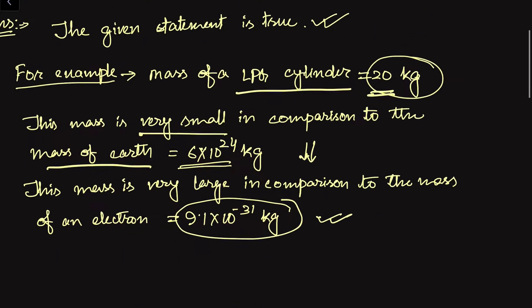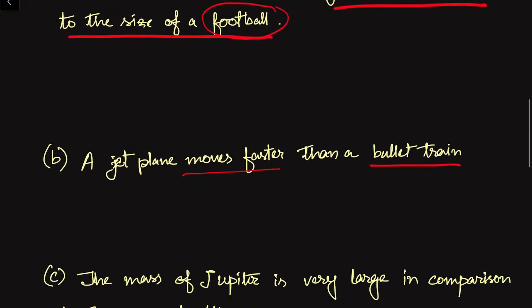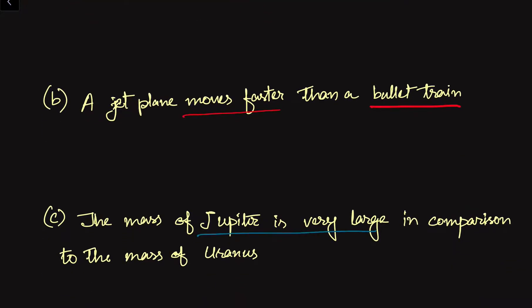Now let us go to our third statement. The mass of Jupiter is very large — in comparison to what? If we compare the mass of Jupiter with the mass of the sun, then it will be smaller. So we have to consider some smaller quantity. We can rewrite this as: the mass of Jupiter is very large in comparison to the mass of Uranus. Uranus is another planet whose mass is smaller than the mass of Jupiter.